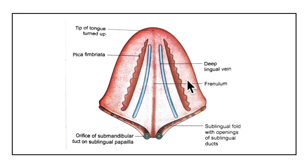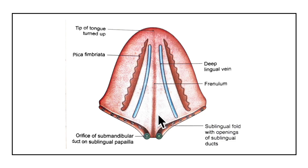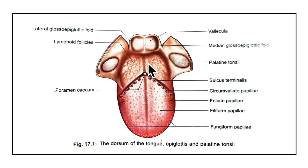More laterally there is a fold called the plica fimbriata that is directed forwards and medially towards the tip of the tongue. On either side there is a prominence caused by the deep lingual vein, and here is the plica fimbriata on either side.